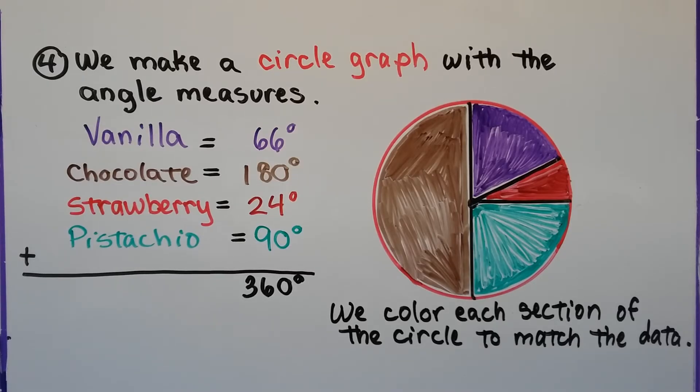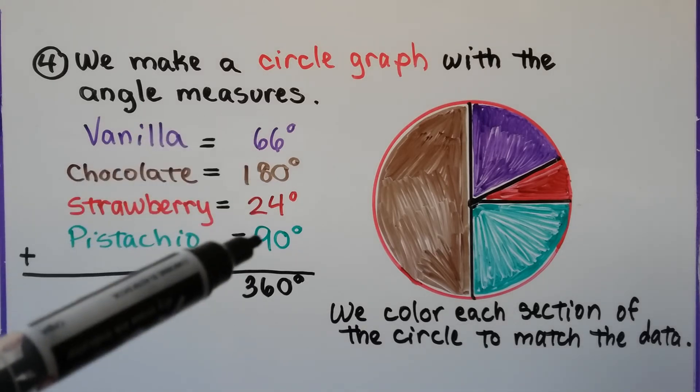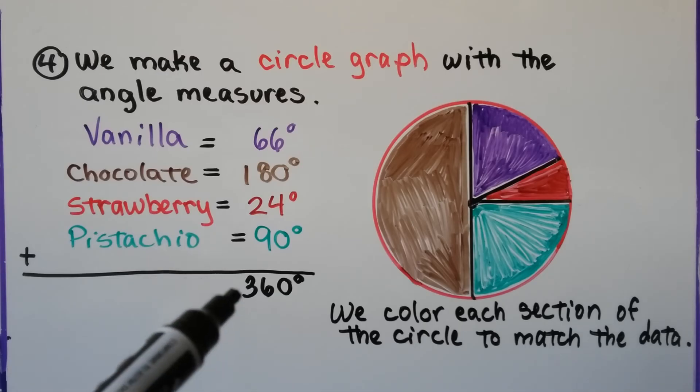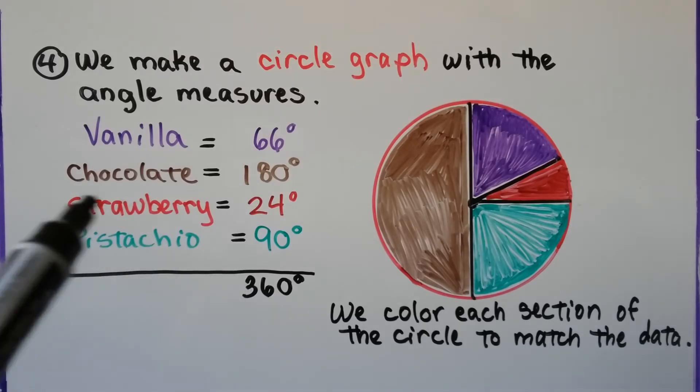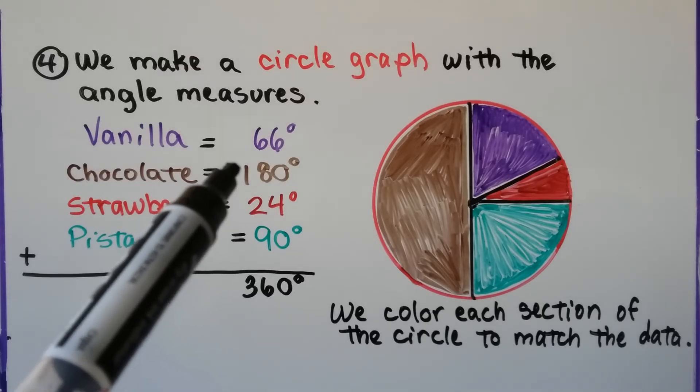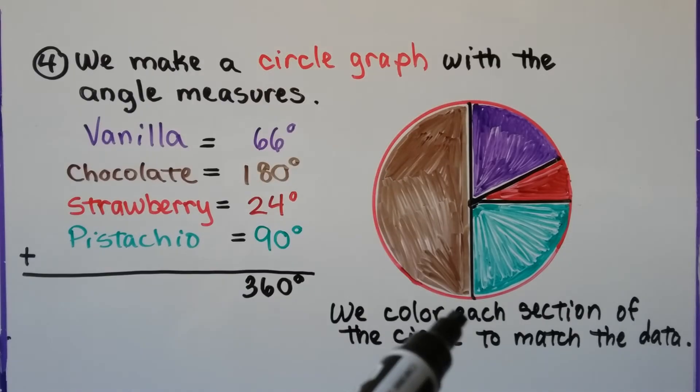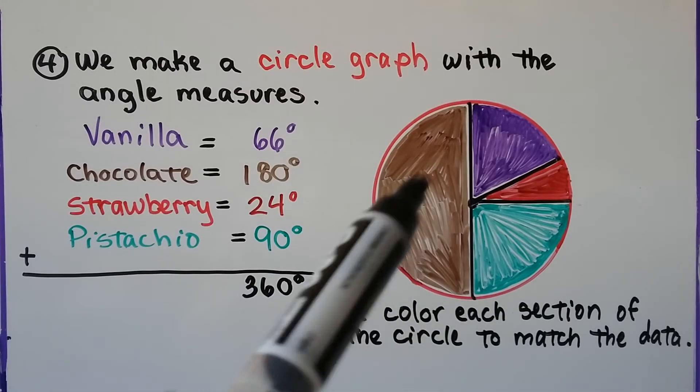Now what we do is make a circle graph with the angle measures. Looking at these angle measures, if we add them all up, they're going to equal 360 degrees. The easiest one to start with would be chocolate, because it's going to be a semicircle. It's going to be half of a circle. 180 degrees is half of 360. We can just draw a line straight down, and we know that's our chocolate.